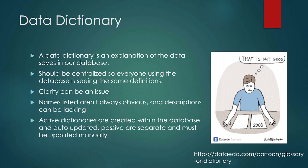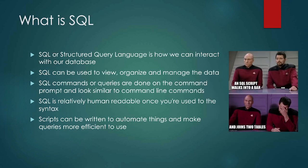Active dictionaries are created within the database and auto-updated. Passive dictionaries are separate and must be updated manually. You may not always know which one you have or see people using it much. But if you are going to work with a database, it's important that you know what data you're talking about — what each column means and what should go into that column or row.